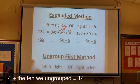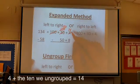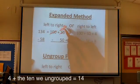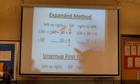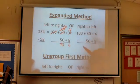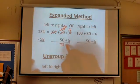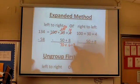After I've done my ungrouping here, now I can subtract. 12 tens minus 5 tens is 7 tens. And I've got nothing here. So 70 plus 6 is 76.